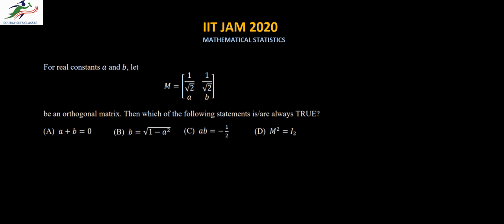Hello and welcome to Soros's Classes. Today we are discussing the IIT JAM 2020 Mathematical Statistics paper. In this question we are told that for real constants A and B, the matrix M is defined as shown, and it is also told that it is an orthogonal matrix. We need to determine which of the following statements is or are always true.